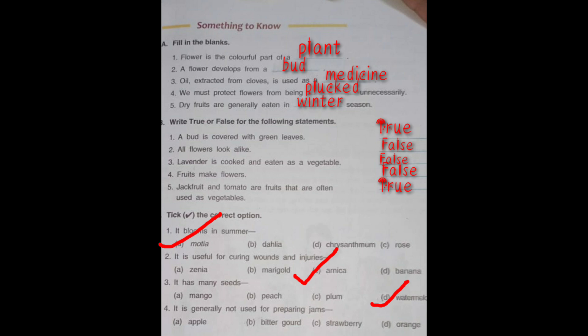Number four: It is generally not used for preparing jams. The options are apple, bitter gourd, strawberry, and orange. Bitter gourd is not used for making jam — all the other options are used for making jam. So, the correct option is bitter gourd.